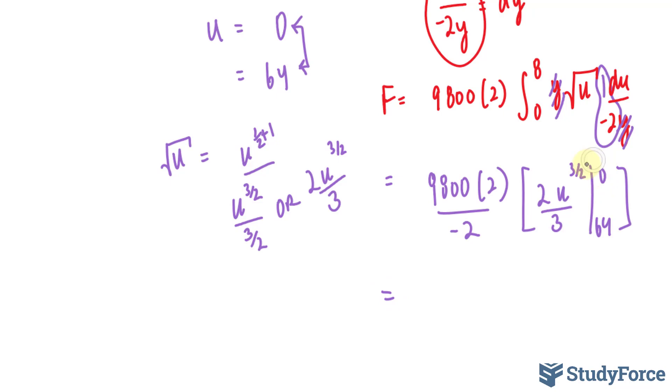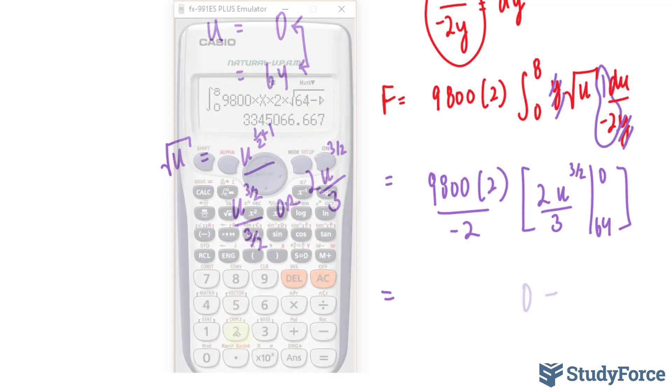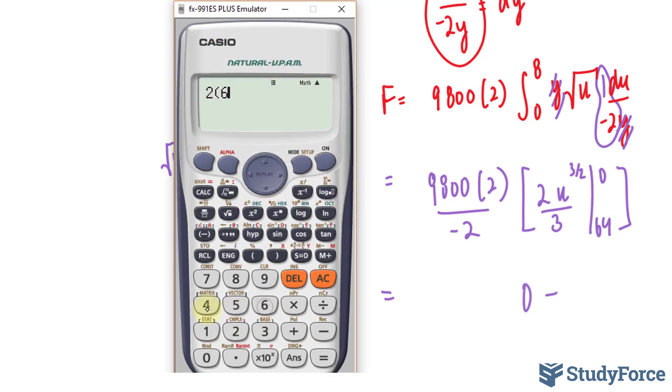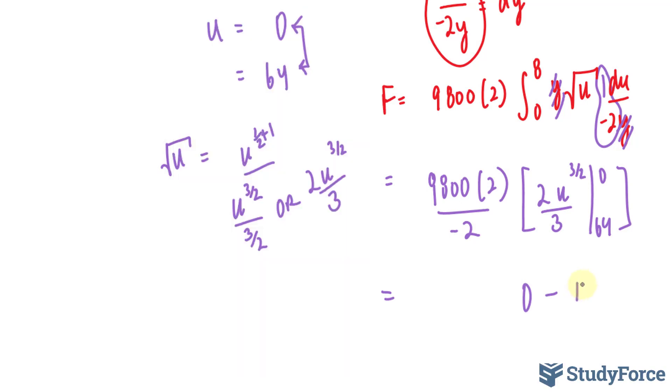Let's start by substituting 0 and then taking whatever that product is and minusing it by what this comes out to be. Substituting 0 into here gives us 0. Minus, and substituting 64 into here, that's a mystery to us, let's find out what that is. 64 to the power of 3 over 2 divided by 3.